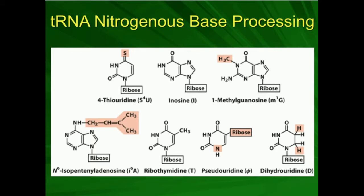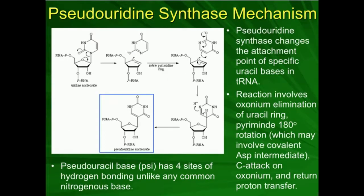We have 4-thiouridine, inosine (which is a deaminated adenosine), 1-methylguanosine, prenylated nitrogenous bases, ribothymidine — we actually have thymine in RNA — pseudouridine, and dihydrouridine. I want to go over some of the mechanisms and enzymes by which we make those.